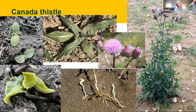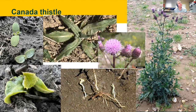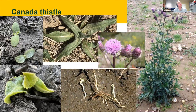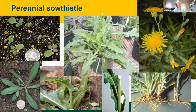Canada thistle is a nemesis for many of us. As a seedling it has very thick spatulate cotyledons typical of the aster family, with spines visible early and slightly opposite lower leaves. It grows from a creeping root system — not a rhizome but a root — that can go six to eight feet deep and spread four to five feet wide in one season. Spines are on the leaf margins with some hair on the upper leaf surface. The mature plant has attractive flowers that pollinators love, but it creeps and becomes very problematic in gardens and flower beds.